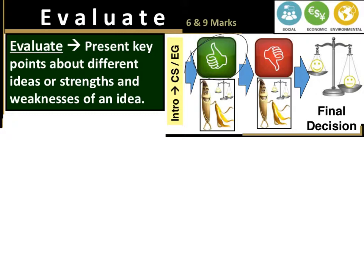Also, you're going to make a mini decision — there's a mini set of scales there. We're going to tell you how to do that in the next slides. Then you're going to look at the disadvantages and PEEL: point, evidence, explain, link it back to the question. Again, another short mini decision statement before you reach your final decision.